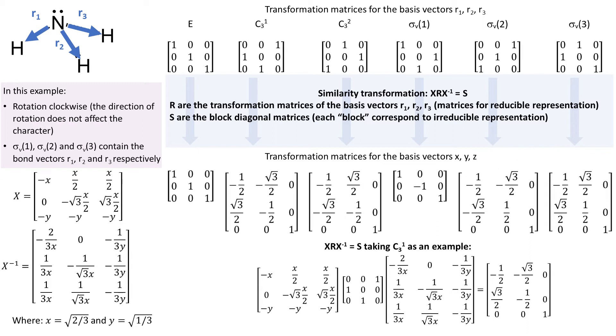The similarity transformation that we just did is physically equivalent to changing the set of basis vectors used for the representation. In this case, from r1, r2 and r3, to x, y and z.